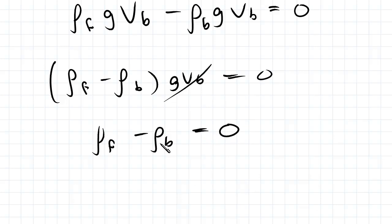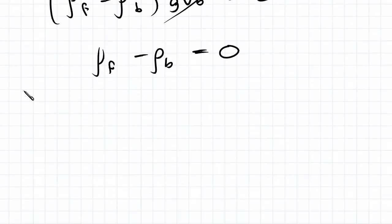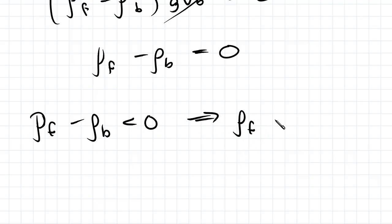So if rho_F minus rho_B was less than zero, there'd be a net force downward. So for the situation where rho_F minus rho_B was less than zero, or when rho_F was less than rho_B, there's a net force downwards which means the body would sink.